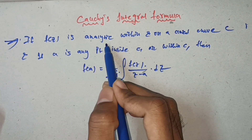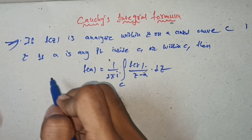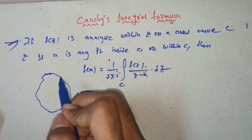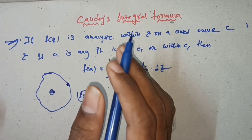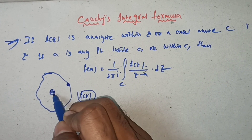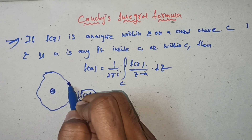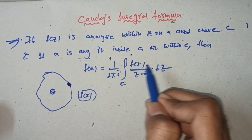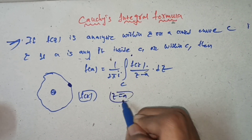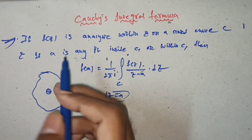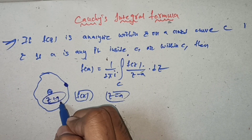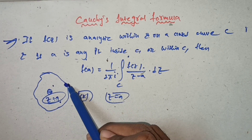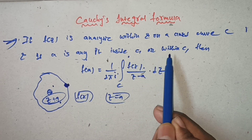Here, f(z) is analytic within and on a closed curve C. Suppose this is a simple closed curve. Now, z minus a equals zero means z equals a, and 'a' is any point inside C or within C.